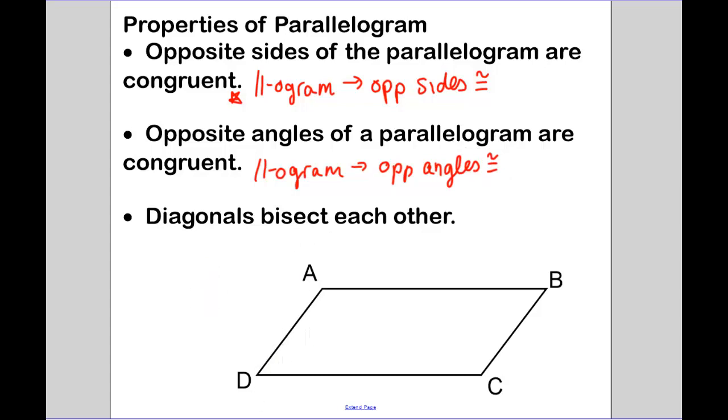And then the diagonals bisect each other. So if I were to draw in our diagonal, I'm going to name it E. That means that diagonals bisect each other. The abbreviation is parallelogram gives diagonals bisect each other. That means that E is the midpoint of DB and AC.